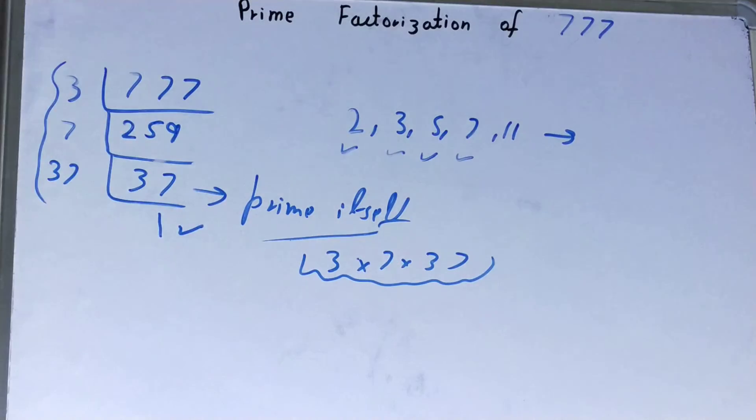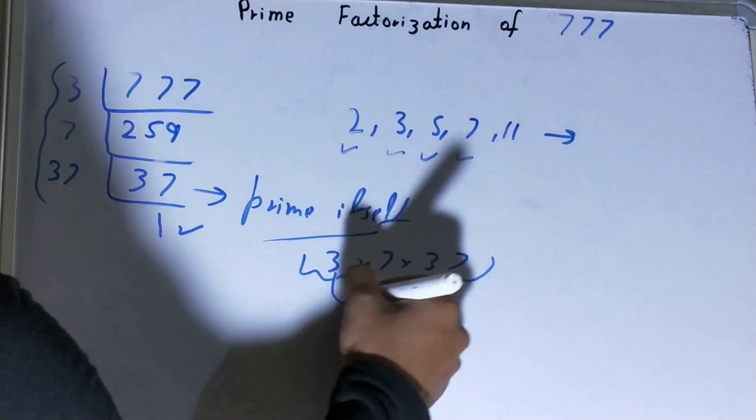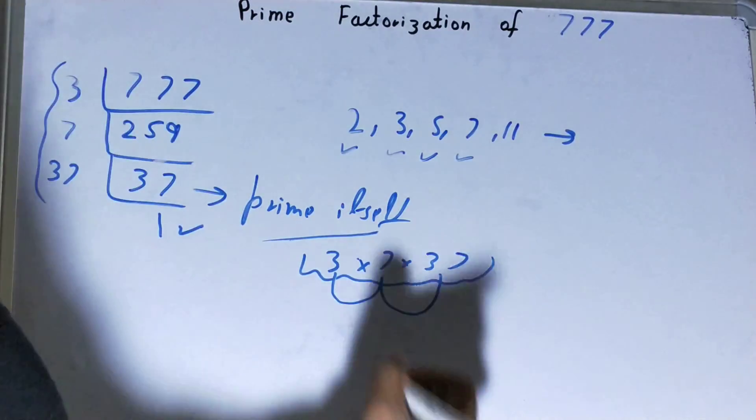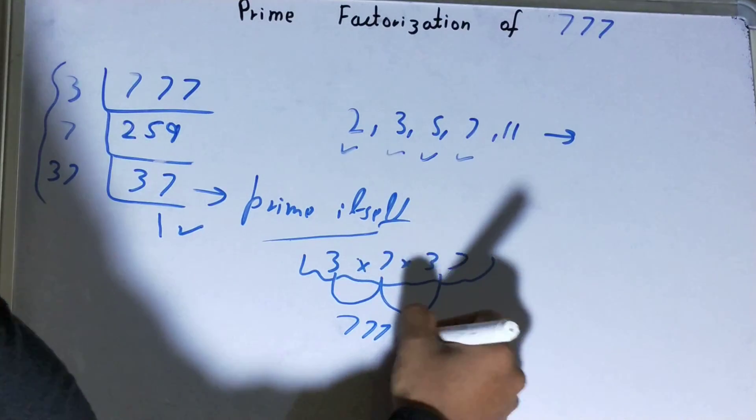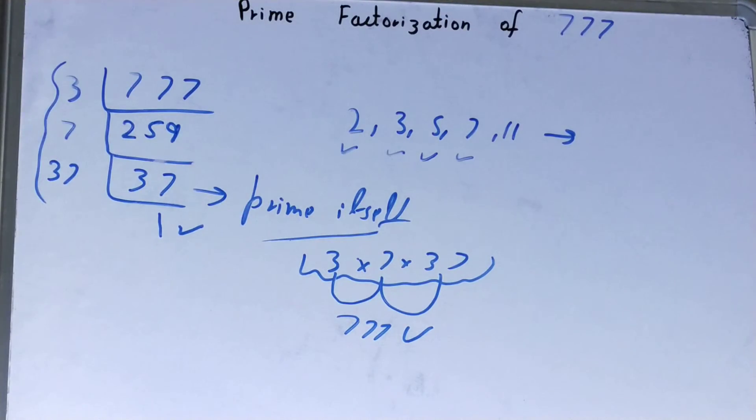For 777, if you want to check whether it is right or not, you can multiply them. 3 times 7 is 21, 21 times 37 is 777. If you're getting the number back again, your answer is totally correct.